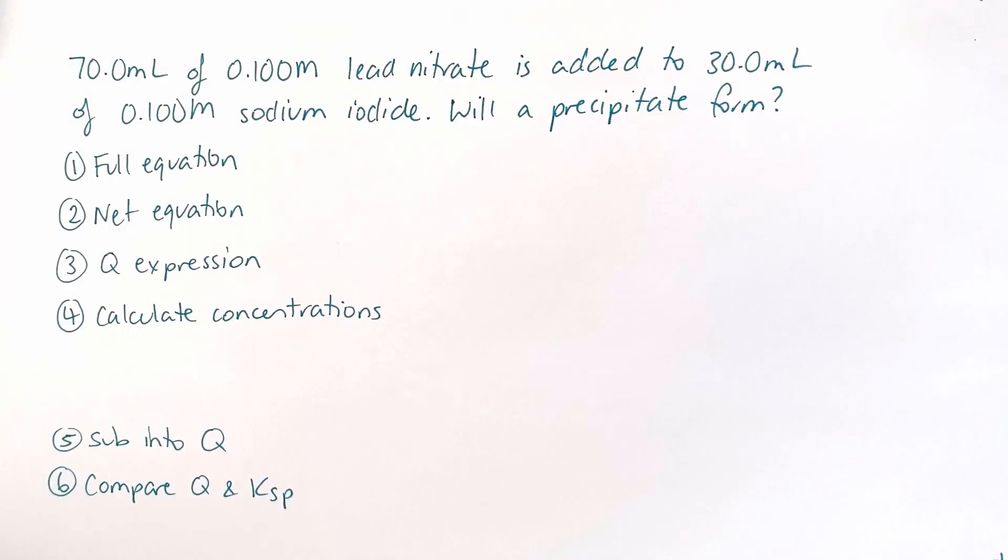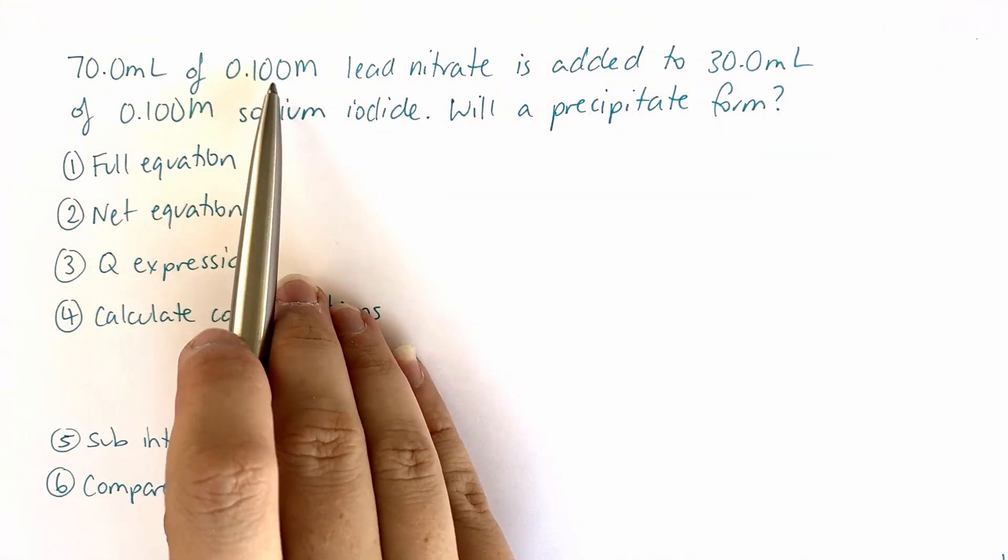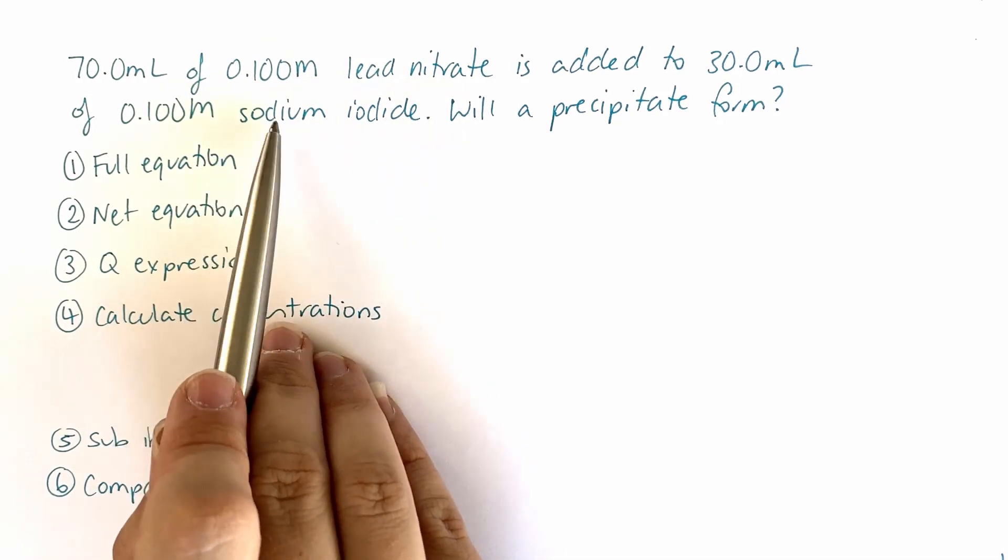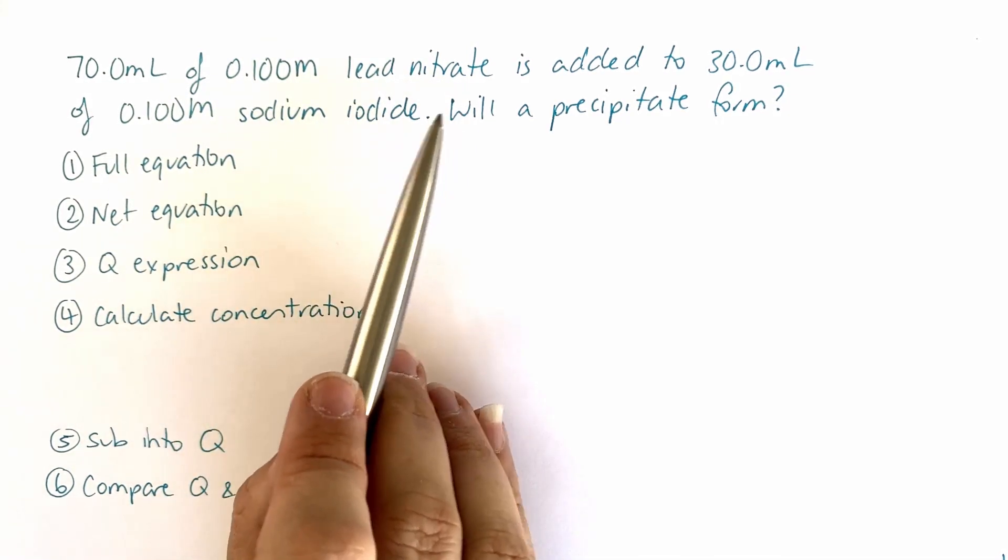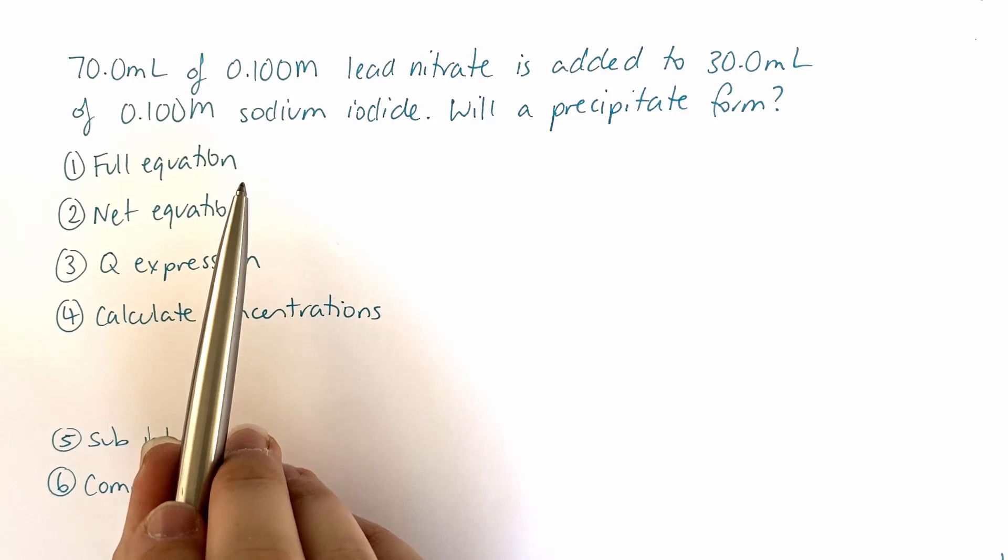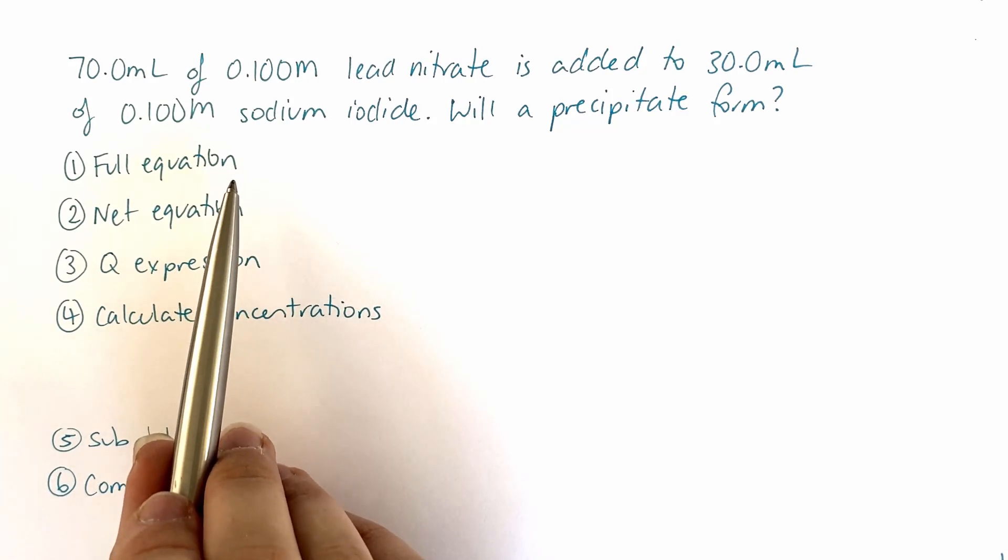Here we've got another example and it is a little bit more complicated than the last example. So we've got 70 mL of 0.1 molar lead nitrate added to 30 mL of 0.1 molar sodium iodide. Will a precipitate form? The first thing we need to do is write a full equation. The reason we're writing a full one for this example and not the last one is because we need to identify which product is actually going to give us our precipitate.